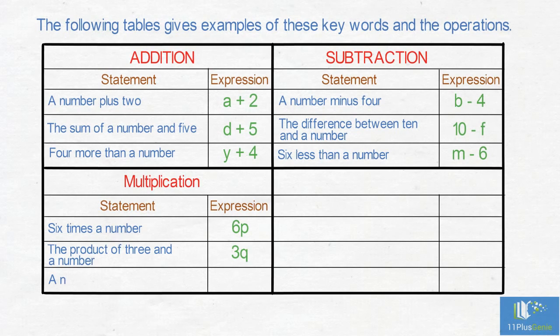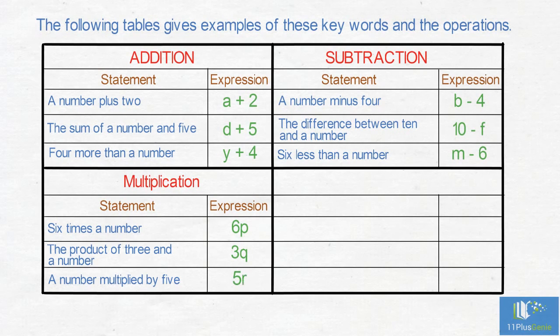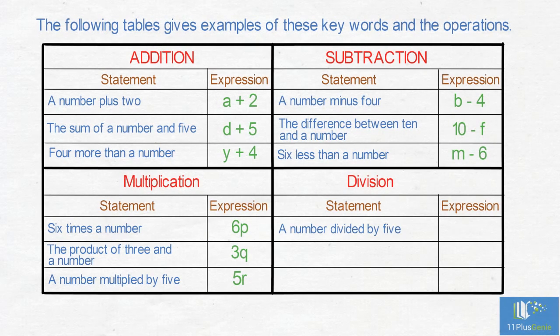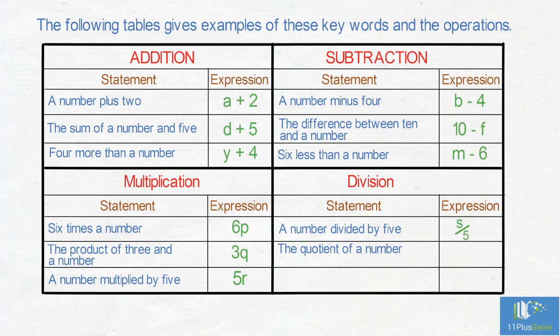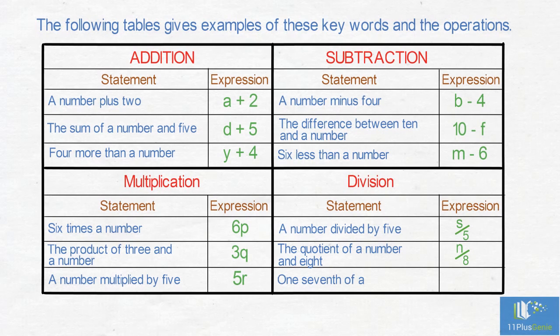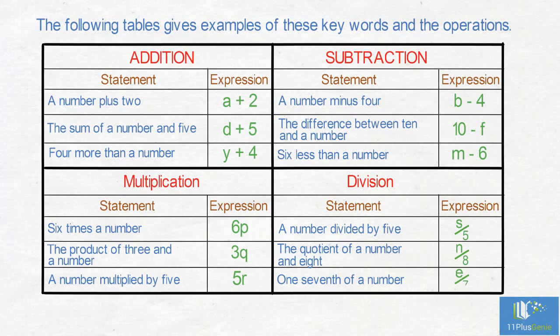Division. The statement is: A number divided by 5. The expression is: s over 5. The quotient of a number and 8 is n over 8. One seventh of a number is e over 7.